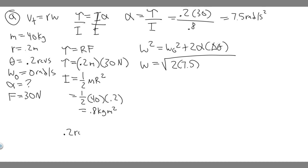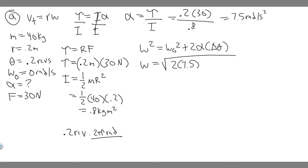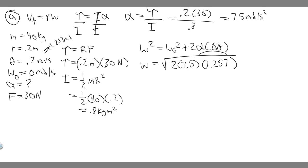To convert: 0.2 revolutions × 2π radians per revolution. The revolutions cancel, giving 0.2 × 2π = 1.257 radians. That's our change in angle theta. So omega equals the square root of 2 × 7.5 × 1.257.